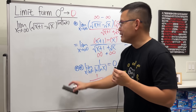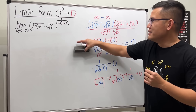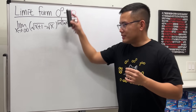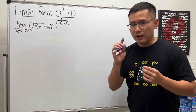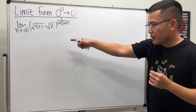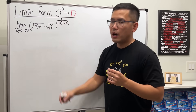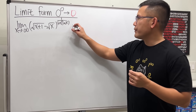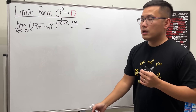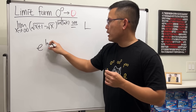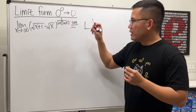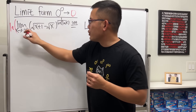Now we just have to do this limit, and hopefully the answer is indeed equal to 0, and I will have completed all the examples: 0 to 0 can approach 1, it can approach a number bigger than 1 or any other number, and it can also approach 0 now. How do we do it? We have a function to a function power. I'm going to set this to be a number L, and I will take the natural log on both sides. You can also write the base as e to the ln of that, but I think the writing is not that pretty. This way is easier.